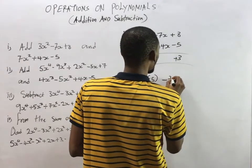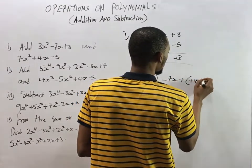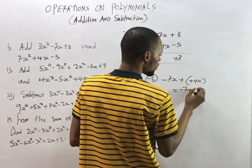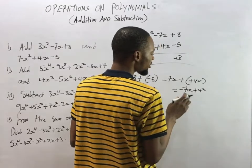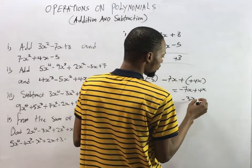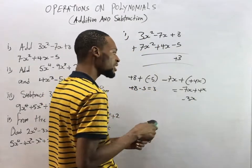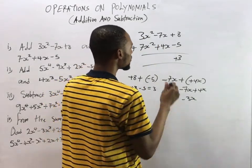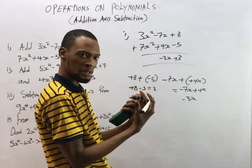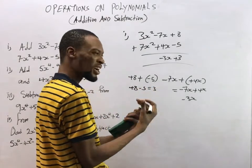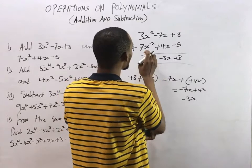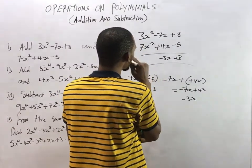For the s terms: -7s plus (+4s). Plus times plus is plus 4s, so -7s + 4s = -3s. Think of it as owing someone 7 but having only 4 — you still owe, so it's -3s. Take note of this mathematical operation; it's very important and will help you avoid errors.